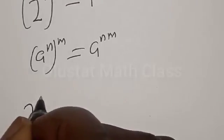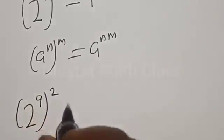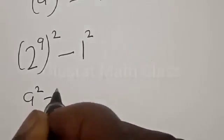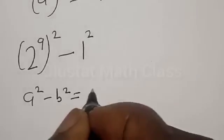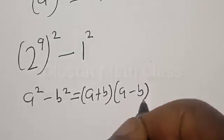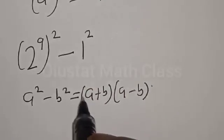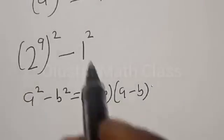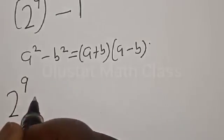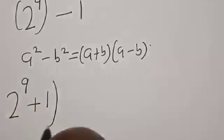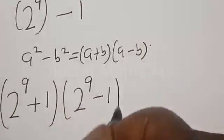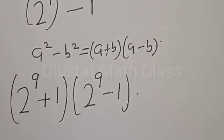So we have 2 raised to power 9, squared, minus 1 squared. Now remember: a squared minus b squared is the same as (a plus b) multiplied by (a minus b). Let's substitute where our a is 2 raised to power 9 and our b is 1. Then we have 2 raised to power 9 plus 1, multiplied by 2 raised to power 9 minus 1.